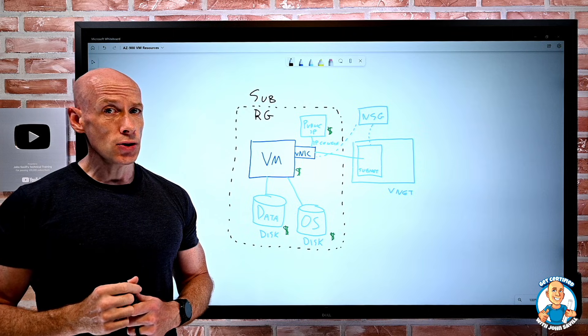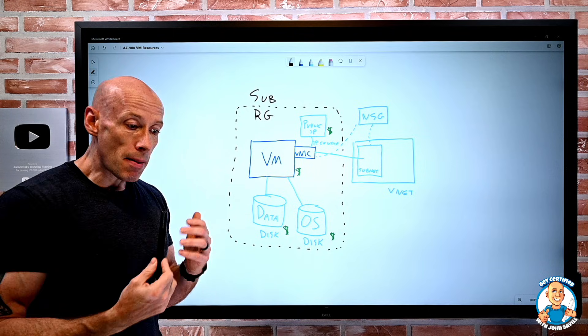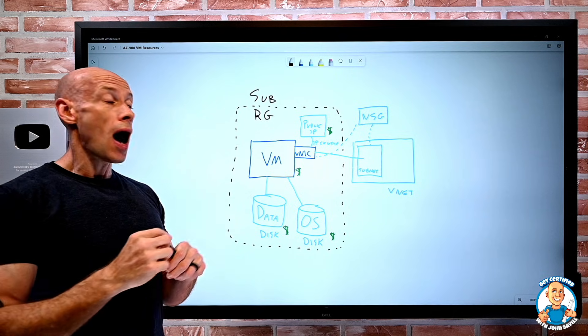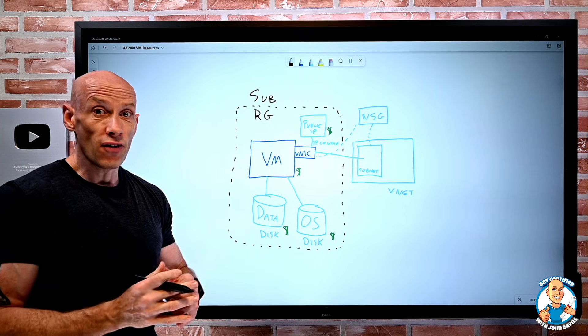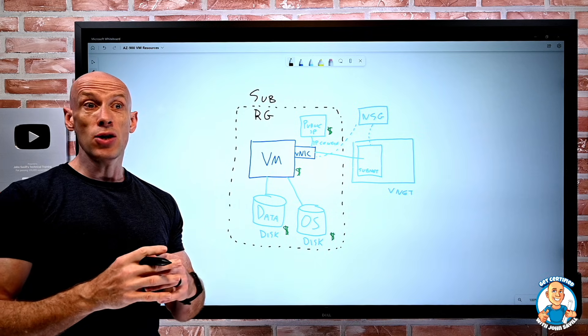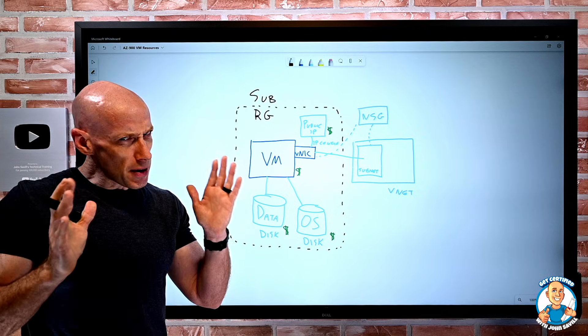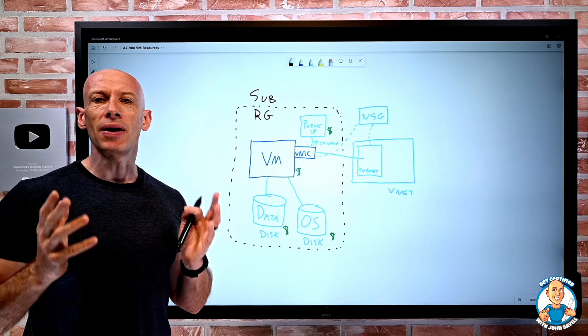So those are the resources we think about for virtual machines. There might be extensions. There might be other services we lend to this to bring other things up. I might connect to a log analytics workspace to send metrics and logs to for virtual machine insights. I might use Azure Bastion to help me get a managed jump box to this. But if I think about just that core VM resource, these are the things I would typically think about.